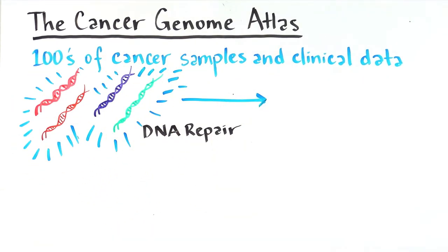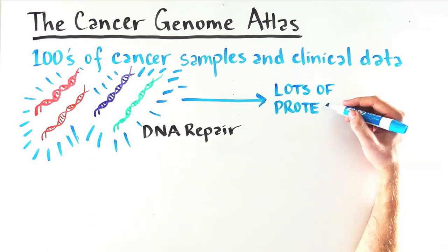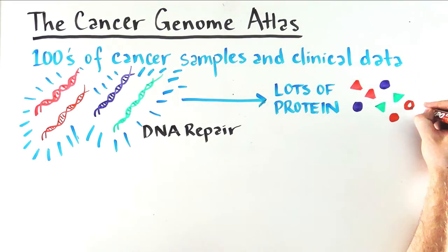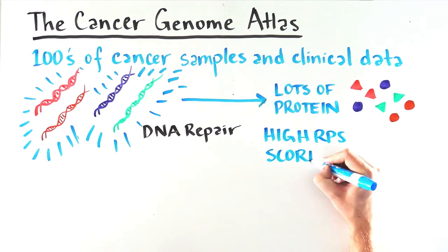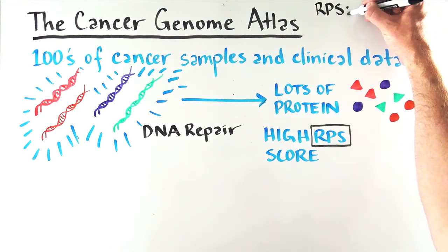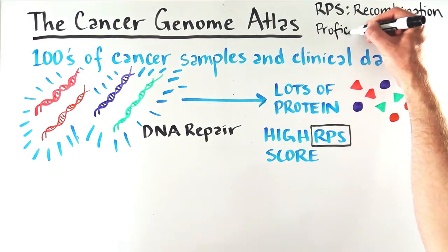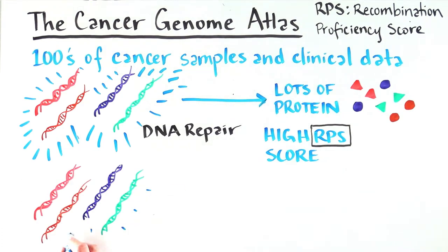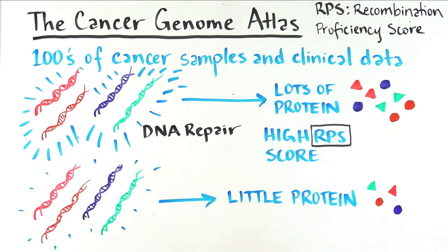The activity of these four genes determines how much protein is produced. When lots of protein is produced from these four genes, the sample is said to have a high RPS score, or recombination proficiency score. When little protein is produced, it has a low RPS score.